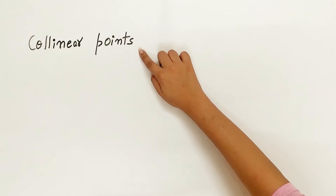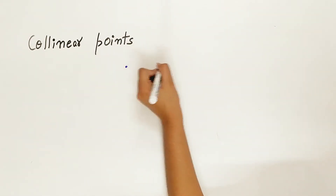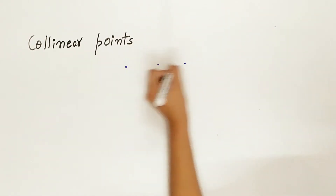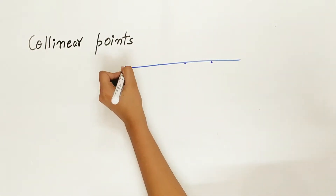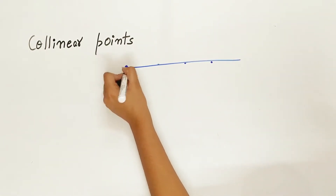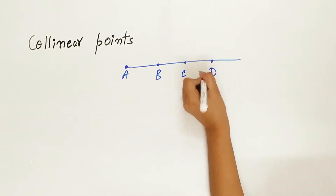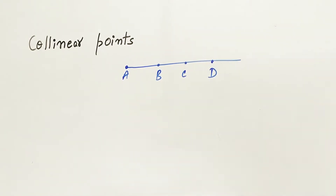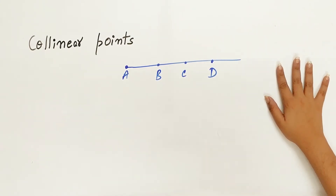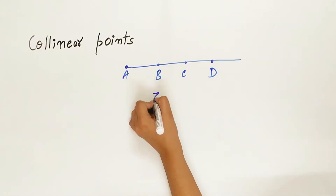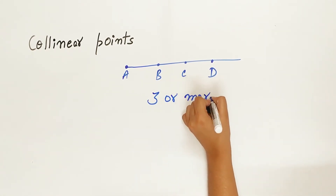Let's look at collinear points. If three or more points lie on the same line, then these points are called collinear points. Remember the condition: three or more points.